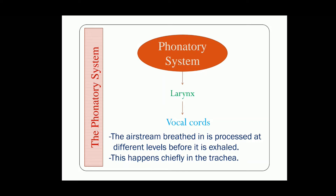Now let us concentrate on the second system. This is the phonatory system, and the phonatory system has two organs. The first one is the larynx and the second one is the vocal cords. When we breathe in and breathe out, at different levels in the trachea the air is processed, and this process takes place with the help of these two organs in the phonatory system.